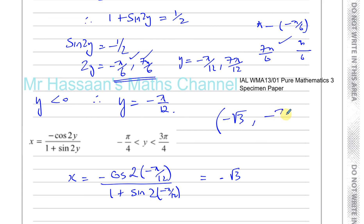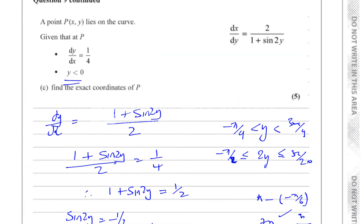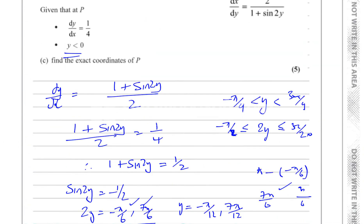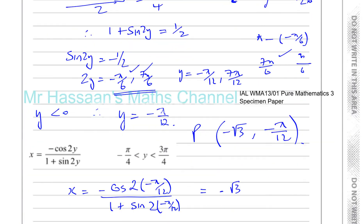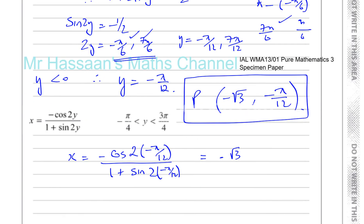So we found the coordinates of P: (minus root 3, minus pi over 12). That completes question number 9, and the specimen paper for P3 is now complete. Thank you for watching.